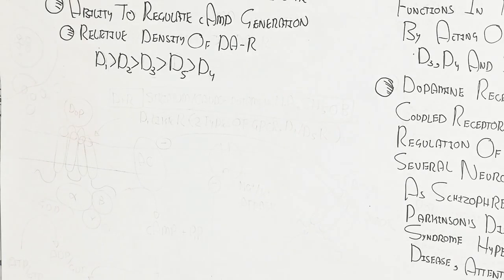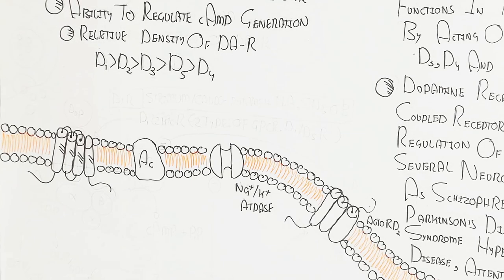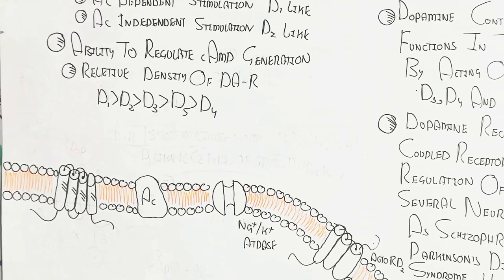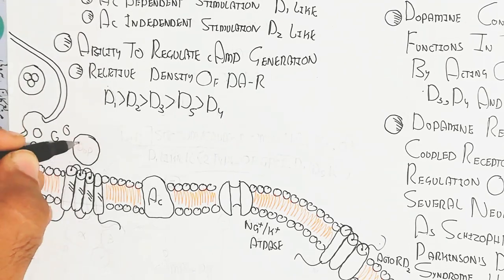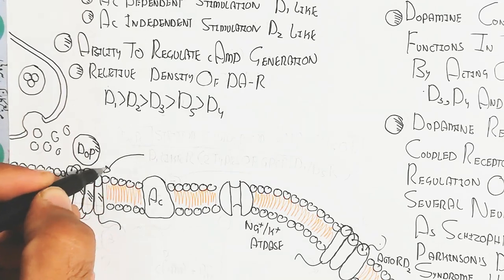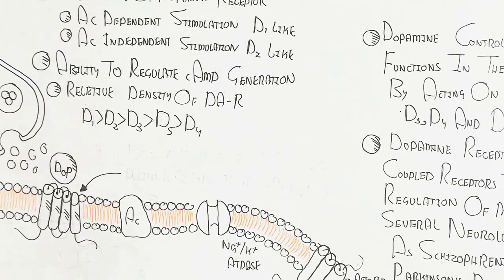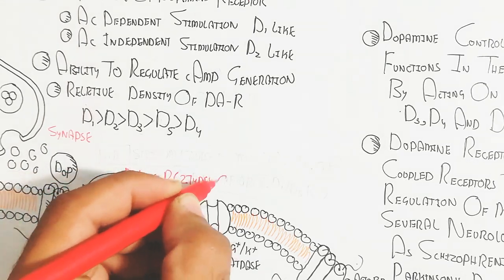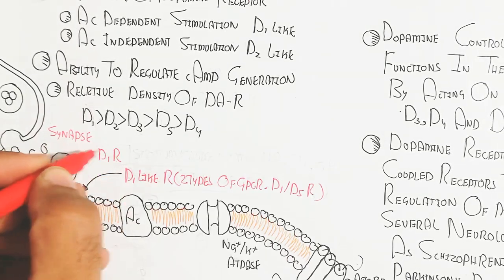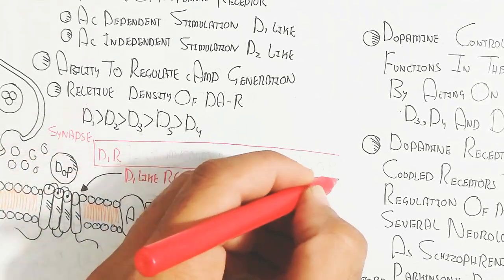Let's begin to understand the dopaminergic neuron when releasing dopamine targeting the G-coupled protein receptor, D1 receptor. After binding with the G-coupled protein receptor, it basically forms a synapse at different tissues with the D1 receptor.